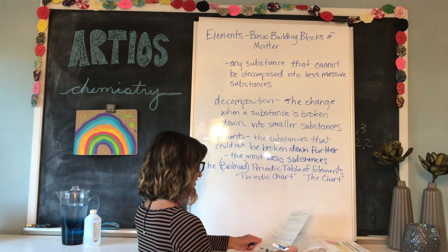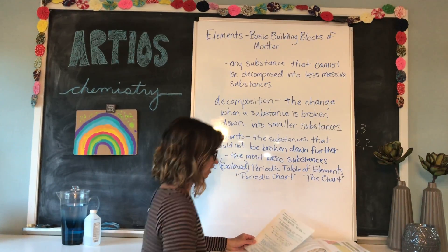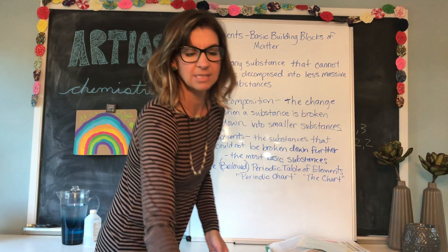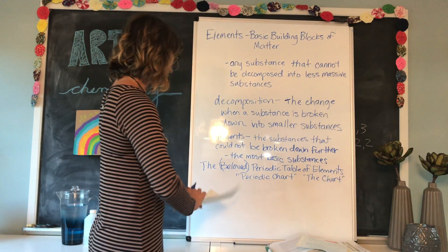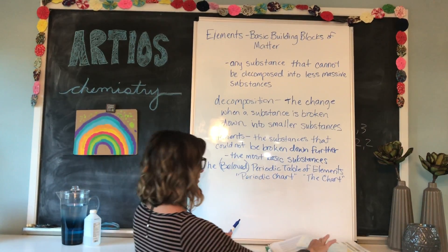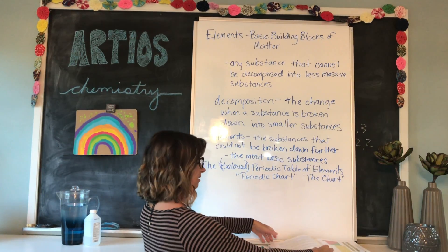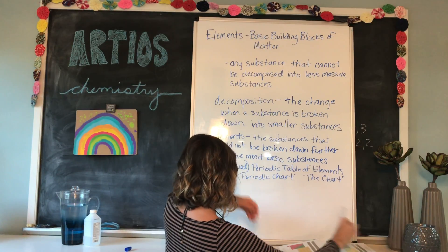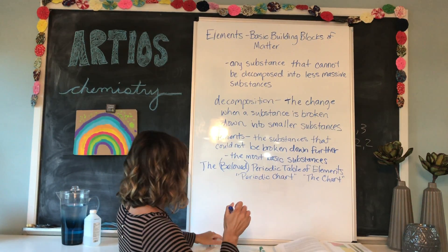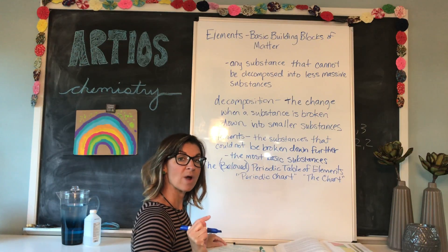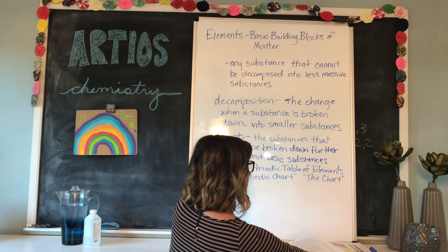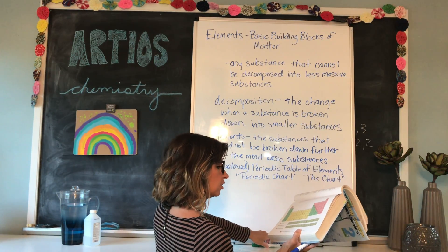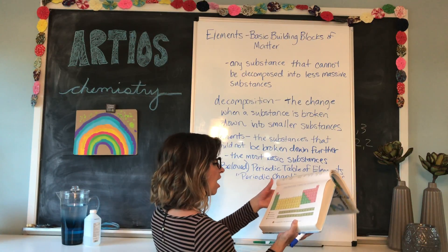So the beloved periodic table of elements — this is a scientist's tool. In fact, it is a chemist's most important tool. If you look in the front cover of your book, you will see it. Each box represents an element. There are 112 represented on the chart right now.